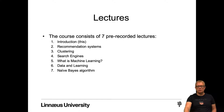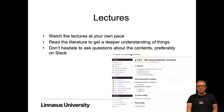So, what shall we do in the course? The course consists of seven pre-recorded lectures: Introduction (that's what you're looking at now), recommendation systems, clustering, search engines, what is machine learning, data and the Naive Bayes algorithm. You watch these lectures at your own pace. You can also read the literature to get a deeper understanding, but watching the lectures should be enough in most cases to know the things needed for the course.